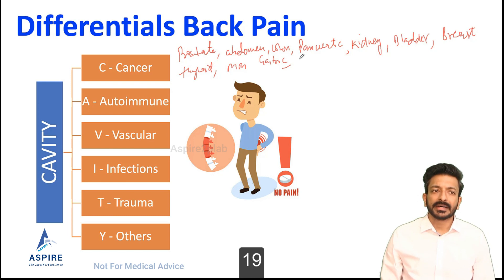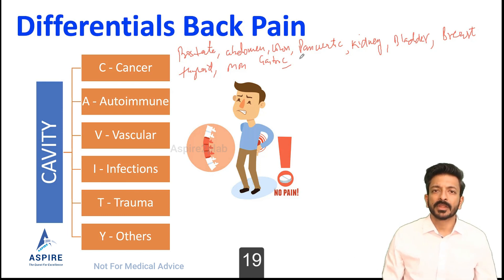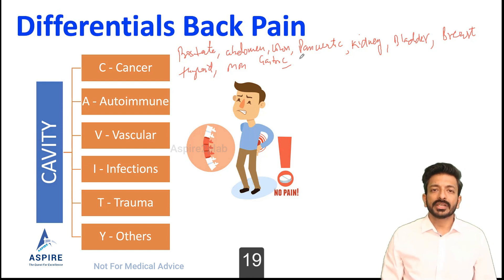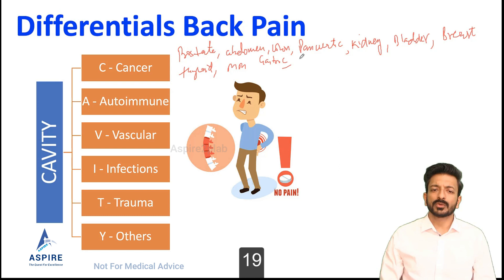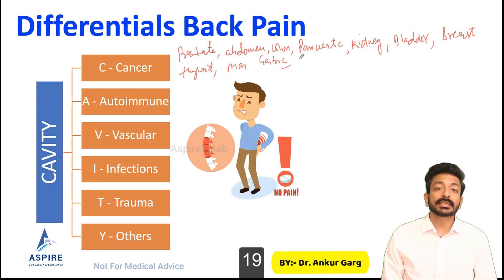In multiple myeloma, patients will have signs and symptoms of hypercalcemia: abdominal pain, renal stones, diarrhea, excessive thirst, urinary frequency, and in later stages, confusion and drowsiness. So all cancers can actually spread to the back — you have to be very careful.